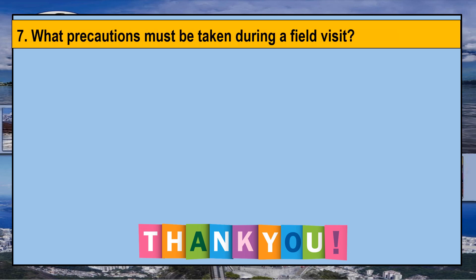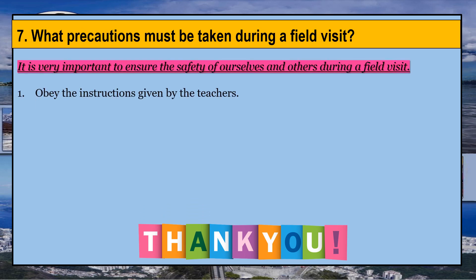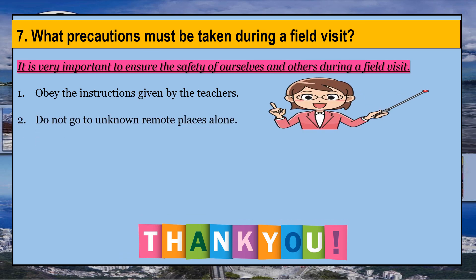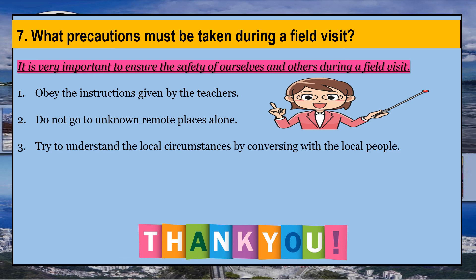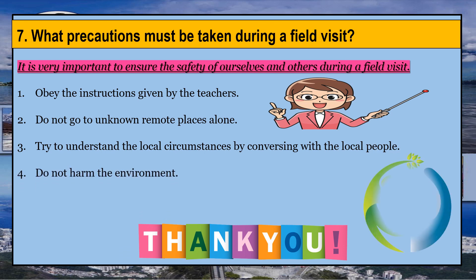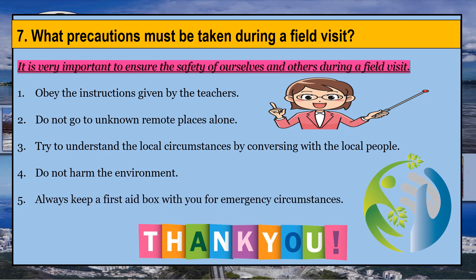We now move on to our last question of this chapter: what precautions must be taken during a field visit? The question simply means what measures or steps you will take in advance to avoid anything unpleasant or dangerous. It is very important to ensure the safety of ourselves and others. First, always obey the instructions given by teachers. Second, do not go to unknown remote places alone. Third, try to understand the local circumstances by conversing with local people. Fourth, do not harm the environment. Fifth, always keep a first aid box with you for emergency circumstances.